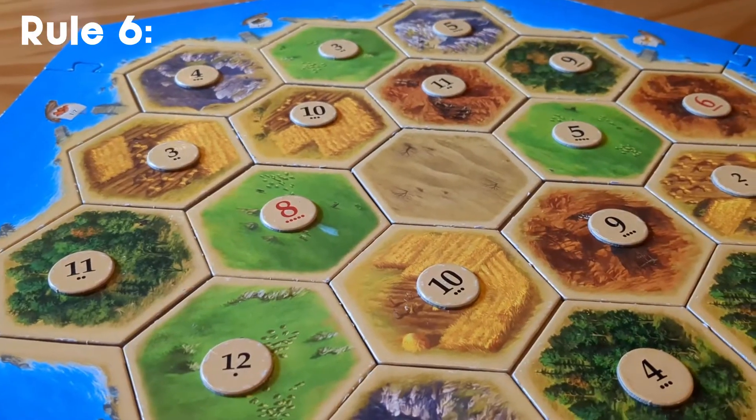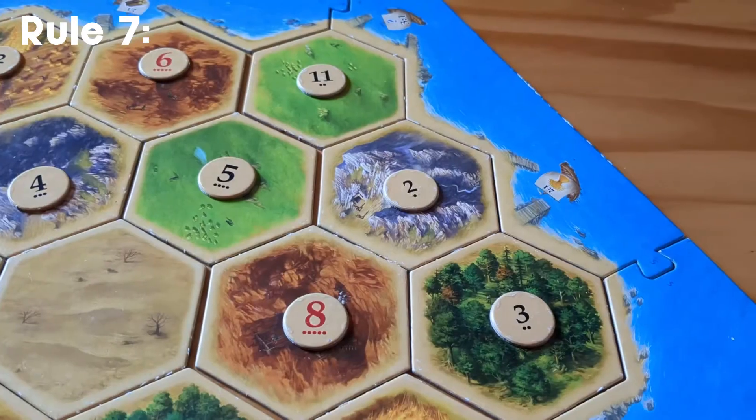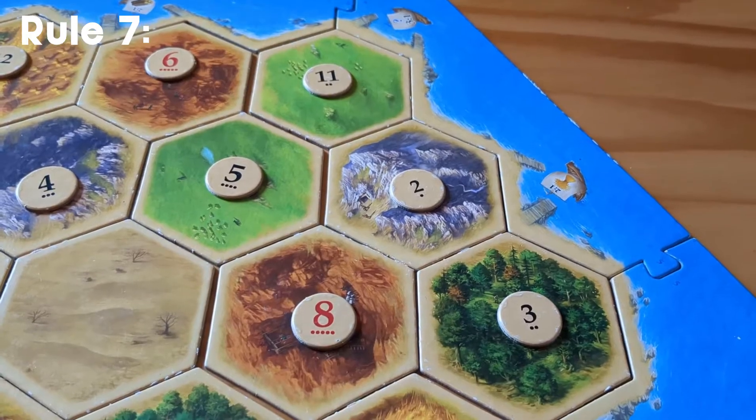Rule six, no two of the same number on the same resource. Rule seven, no sixes or eights on the same resource.